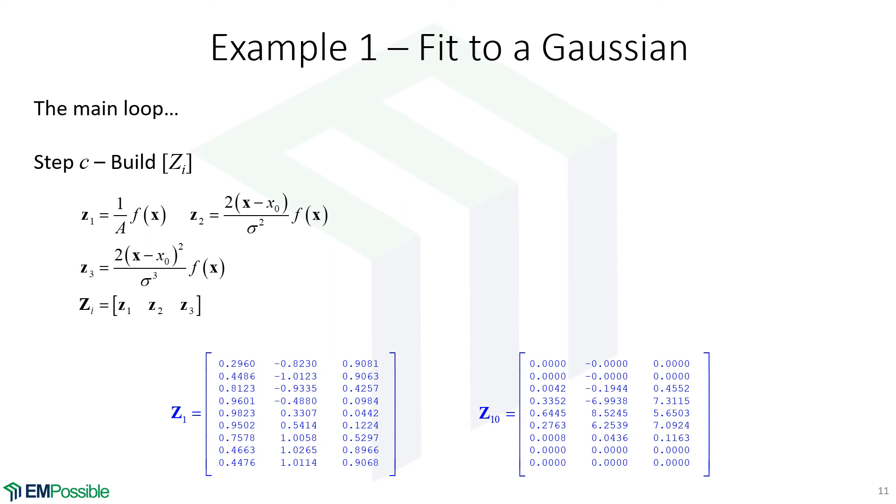Now we build the big Z matrix. I like to calculate three column vectors. Here's the first column, second column, third column, and then stick them into the Z matrix. So here's the Z matrix on the first iteration with that first guess at our curve fit, and here's the Z matrix after about 10 iterations, just to give you an idea of the numbers.